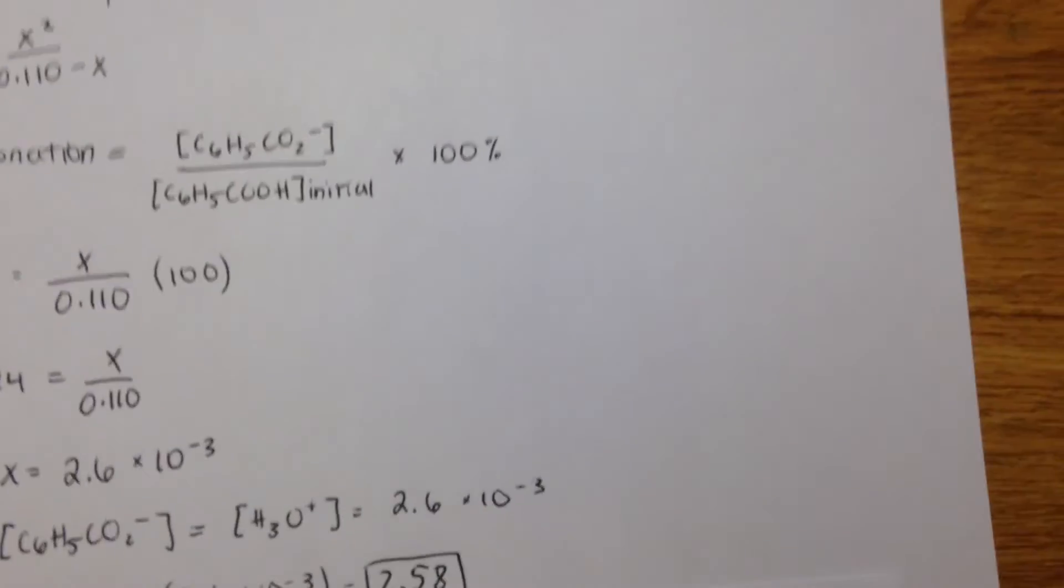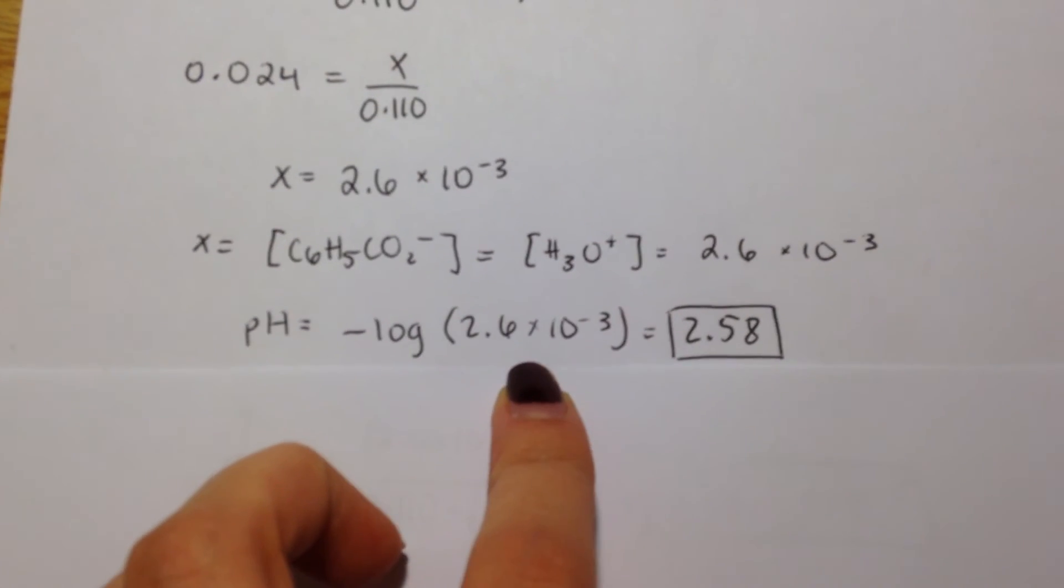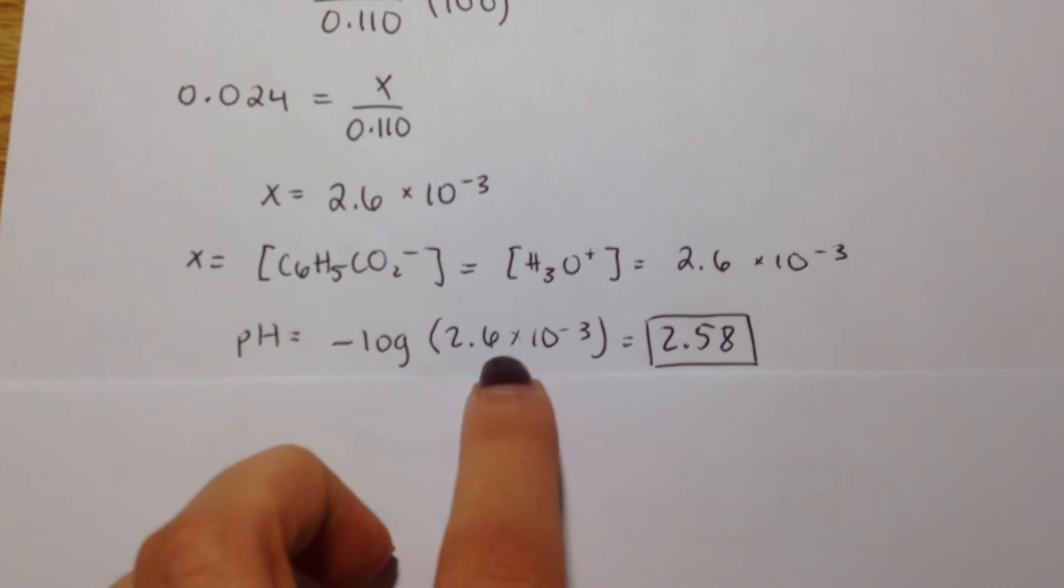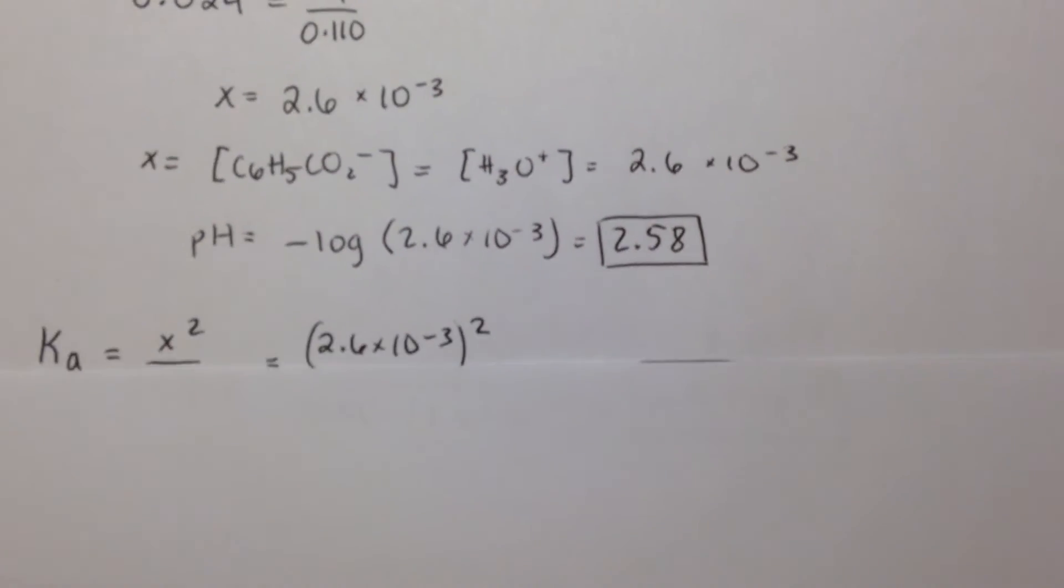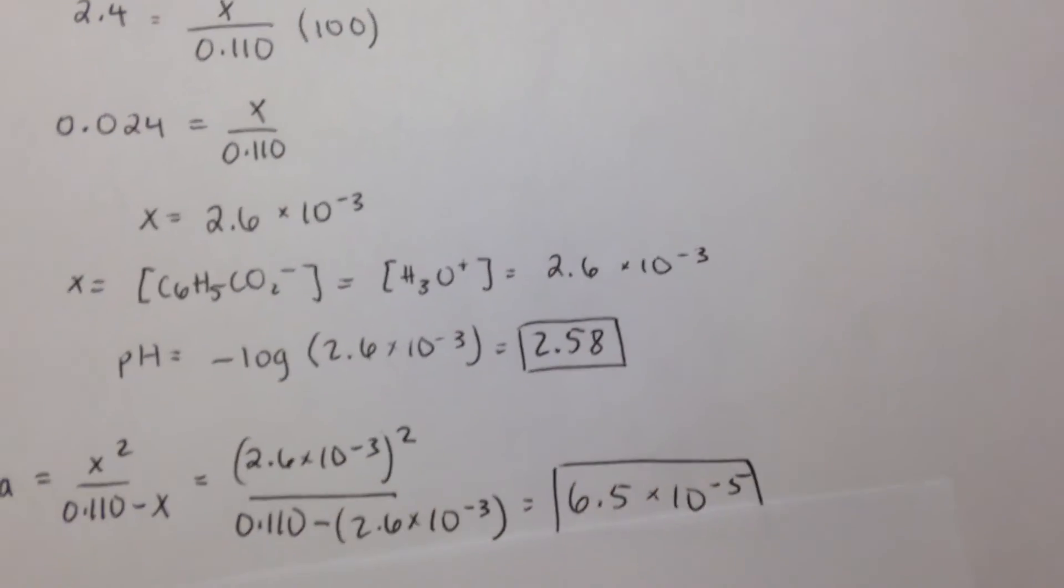And then to find the pH of this, we just do negative log of the concentration of the hydronium ions, and that's 2.58, with the three significant figures.